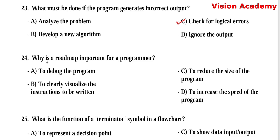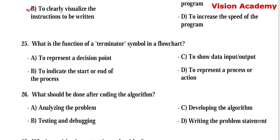Question number 24: Why is a roadmap important for a programmer? Option A, to debug the program. Option B, to clearly visualize the instructions to be written. Option C, to reduce the size of the program. Option D, to increase the speed of the program. Here, option B, to clearly visualize the instructions to be written, is the right answer.